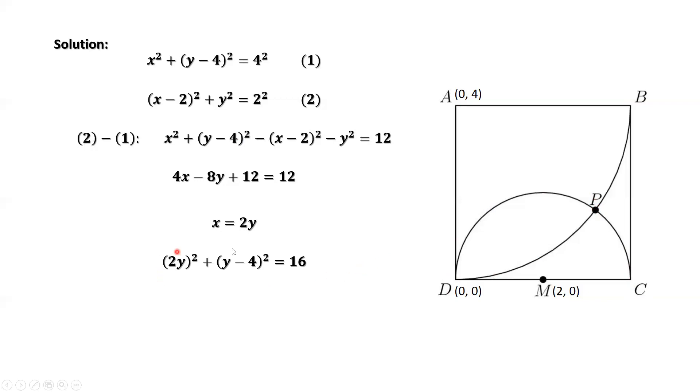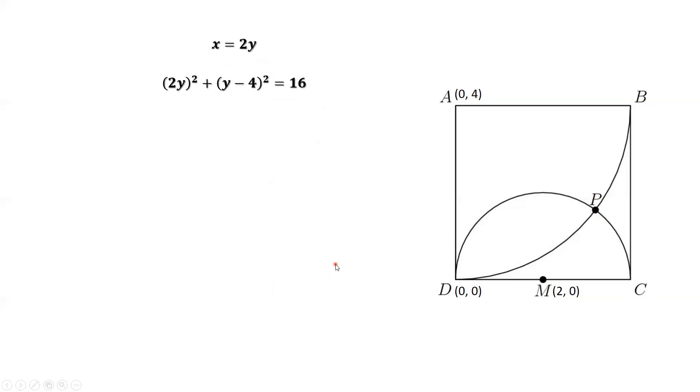We have 2y squared plus y squared minus 8y plus 16. Solve this equation for y-value. Simplify. We have 5y squared minus 8y equals 0. Factoring the left-hand side, we have y times (5y minus 8) equals 0. This implies y equals 0 and y equals 8 over 5.